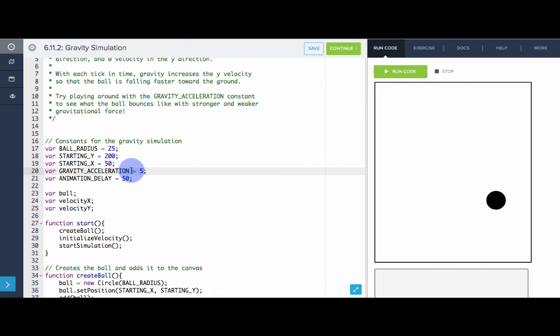What's cool is we can actually play around with the inputs into the model. Let's say instead of an acceleration of five, we want really weak gravity. We're only going to add one to the y direction every single moment. Now what's going to happen? My hypothesis is that the gravity is weaker, so the ball is going to fall slower and bounce higher. Let's see if that's what happens.